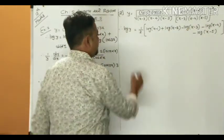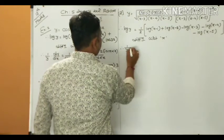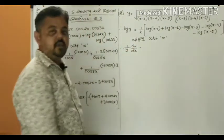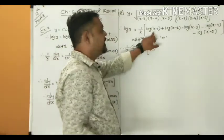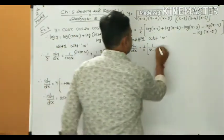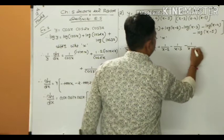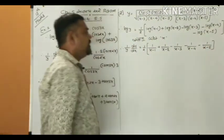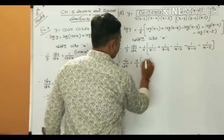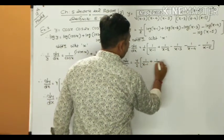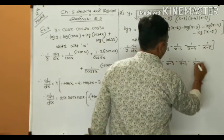Now differentiate with respect to x. (1/y) · dy/dx = (1/2)[1/(x−1) + 1/(x−2) − 1/(x−3) − 1/(x−4) − 1/(x−5)]. Solving for dy/dx: dy/dx = (y/2) · [1/(x−1) + 1/(x−2) − 1/(x−3) − 1/(x−4) − 1/(x−5)].